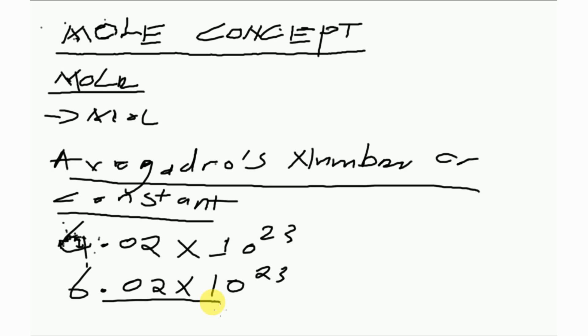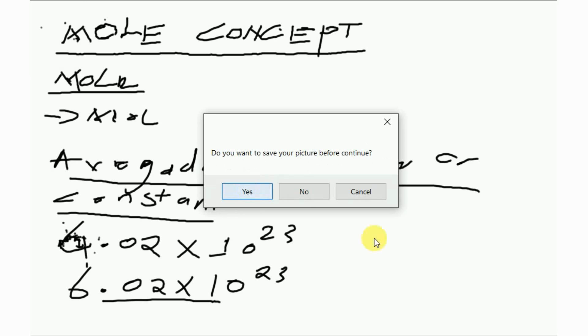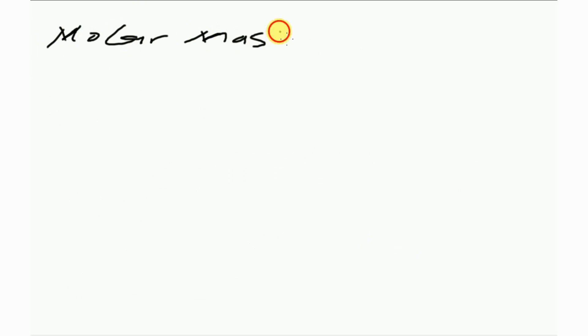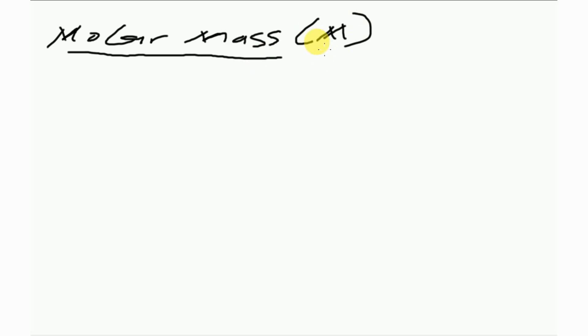The next thing we are going to look at is the molar mass. The molar mass is defined as the mass of one mole of atoms or molecules. Molar mass is represented by capital letter M, and the units are measured in grams per mole.